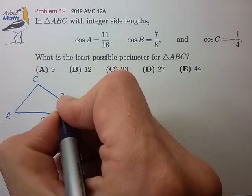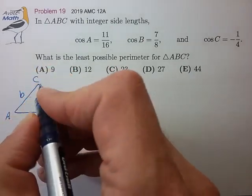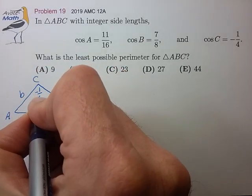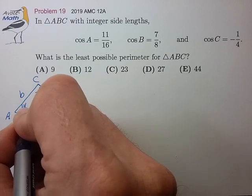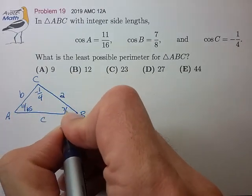Sides A, C, and B. Let me just write in the cosines: 11/16, 7/8.